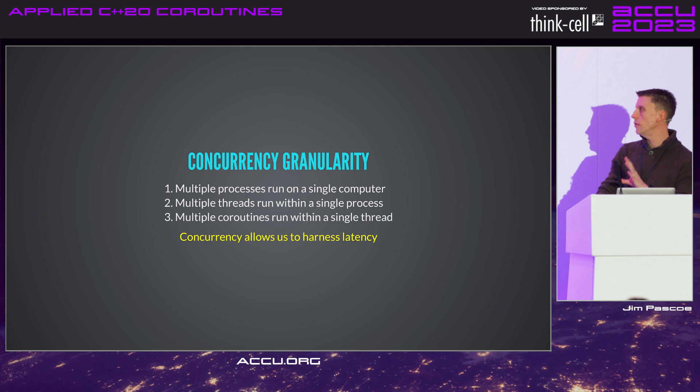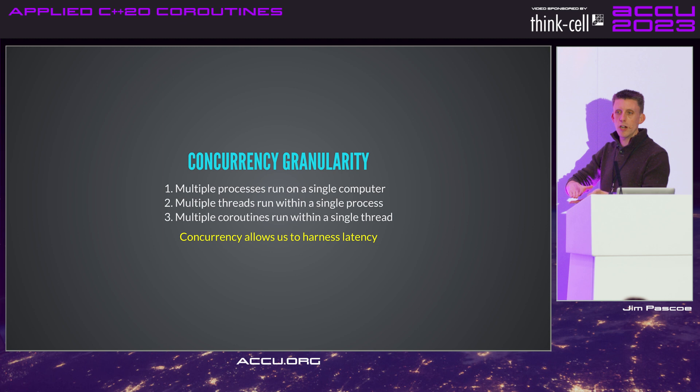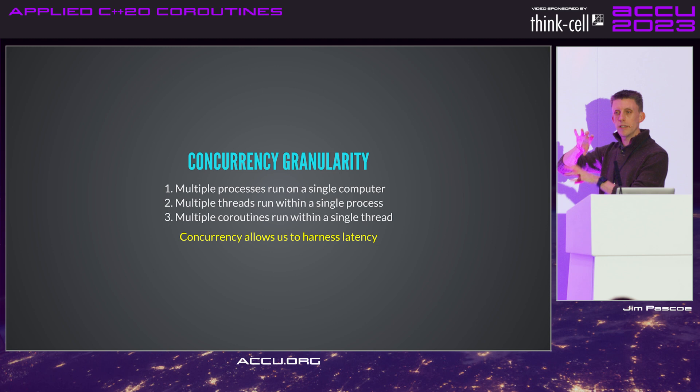From an embedded context, concurrency — as we'll see in the mobile mesh example — allows us to harness those windows of latency. Rather than having your thread entirely blocked, if you're looking at a thread body and thinking 'if I call this blocking operation I could be doing useful work elsewhere,' coroutines are the thing to reach for at that point.